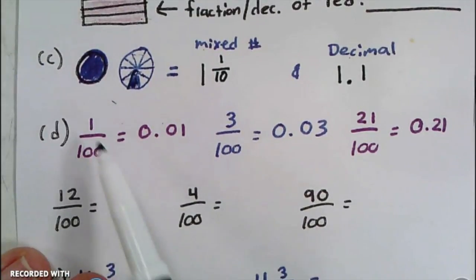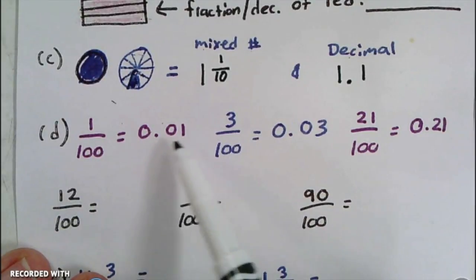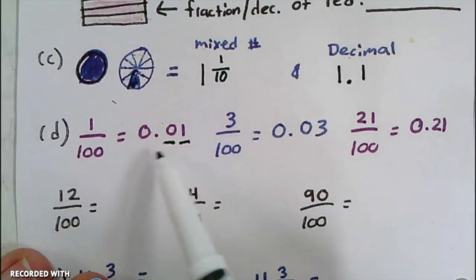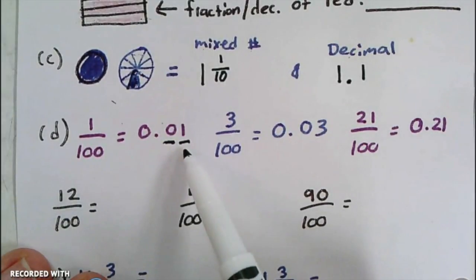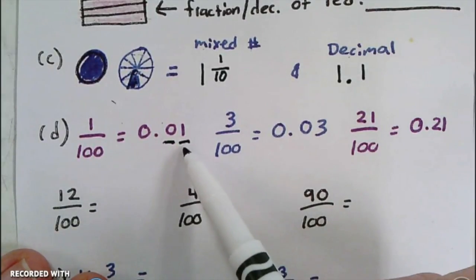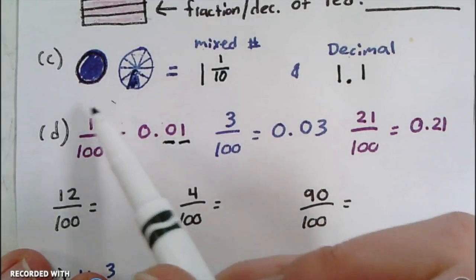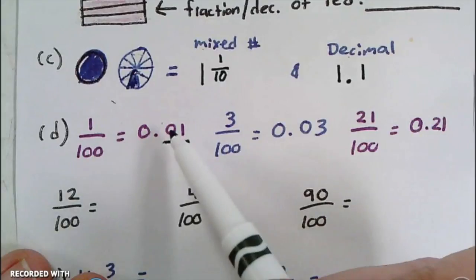decimal. So this is the tenths and this is the hundredths—centi was hundred—it was right in that second place. So if we have one-hundredth, the 1 needs to go in the hundredths spot. I'll put my 1 there, and if there's no other number there I'm going to put a